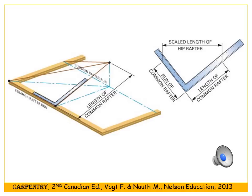This diagram shows two different right angle triangles you can use to find the length of the hip rafter. The first uses the run of the hip rafter and the rise of the building — the hypotenuse gives you the line length. The second has a base equal to the run of the common rafter and a side equal to the length of the common rafter. Both cases give you the same length for the hip rafter.